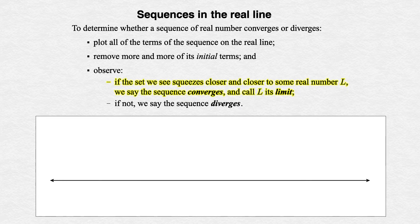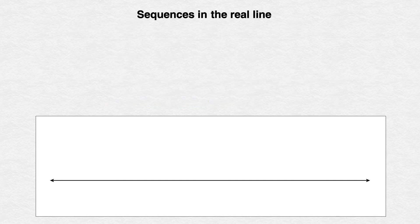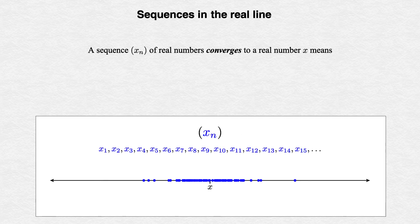Now, this last behavior, convergence, is what we're going to focus on. Divergence just means the sequence does anything else. How do we express in a precise, logical manner the statement that a sequence x_n of real numbers converges to a real number x?